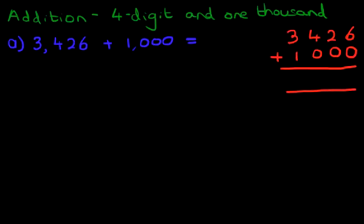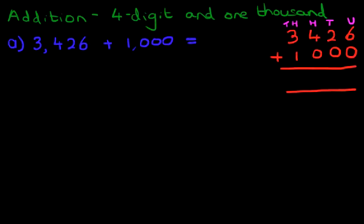We can label the columns. The first column is the units, the one next to it is the tens, then we have the hundreds, and lastly we have the thousands column. Now you know the routine — we begin adding the columns one by one, and we always start with the column on the right-hand side first.